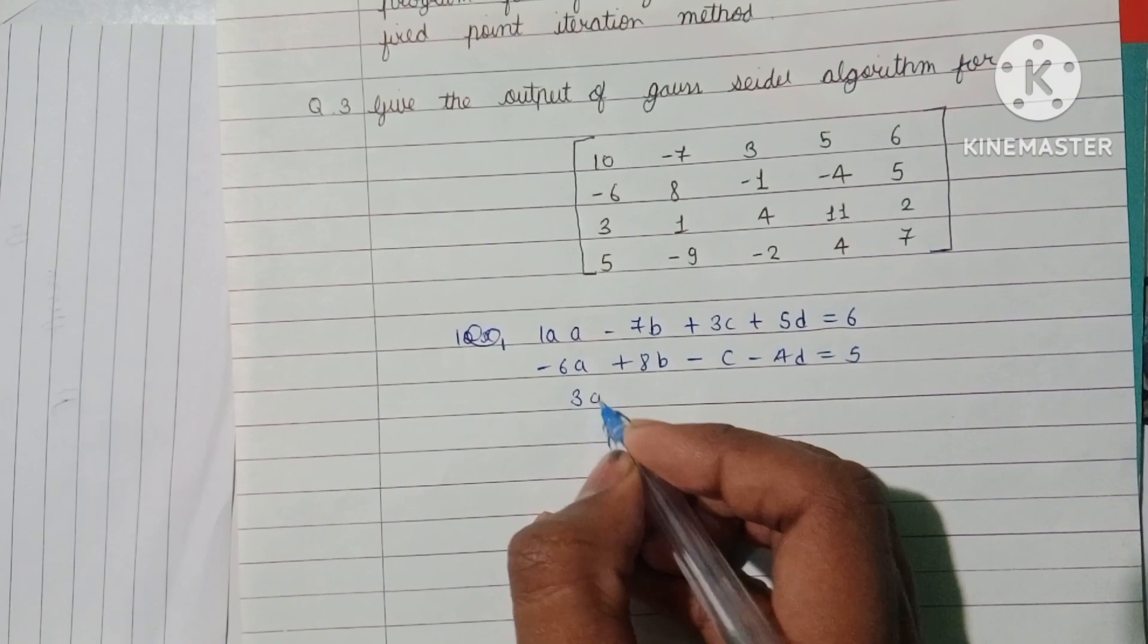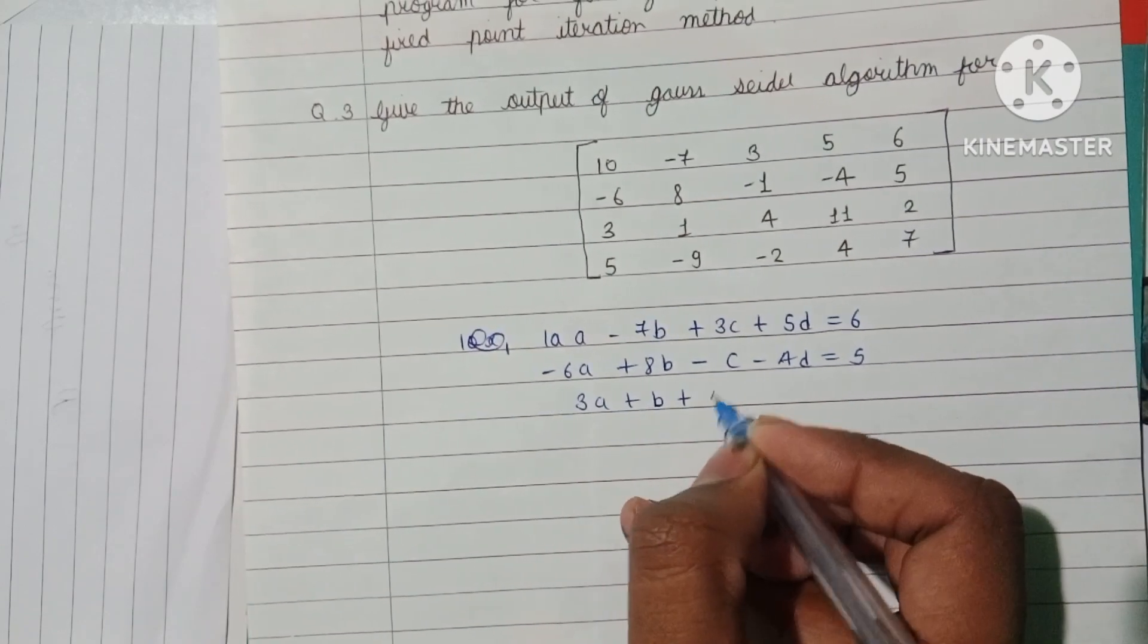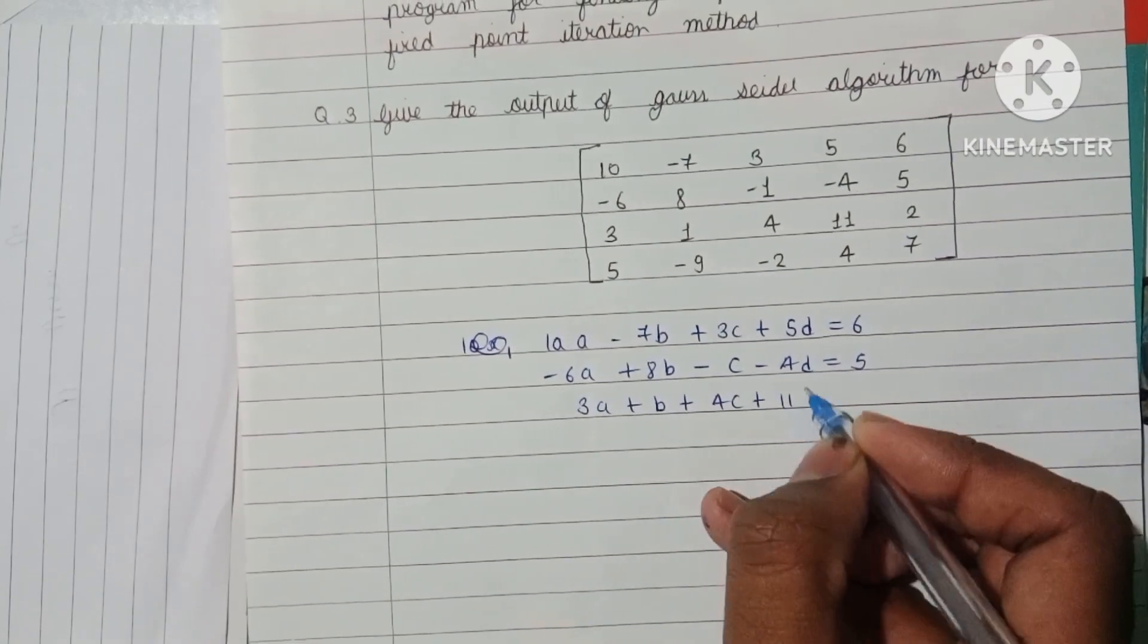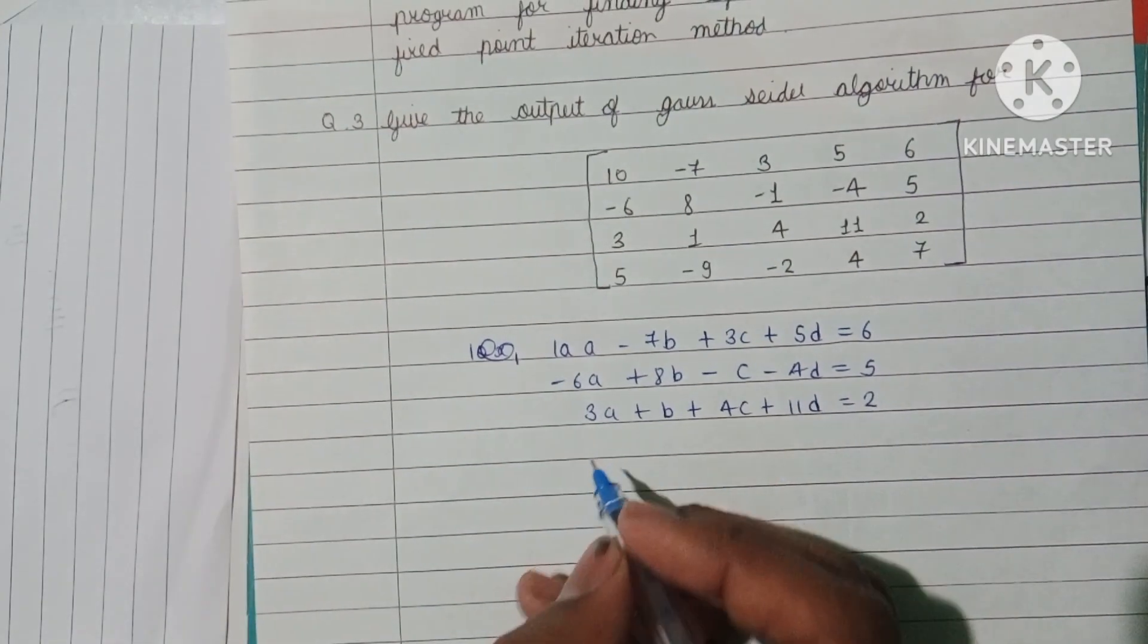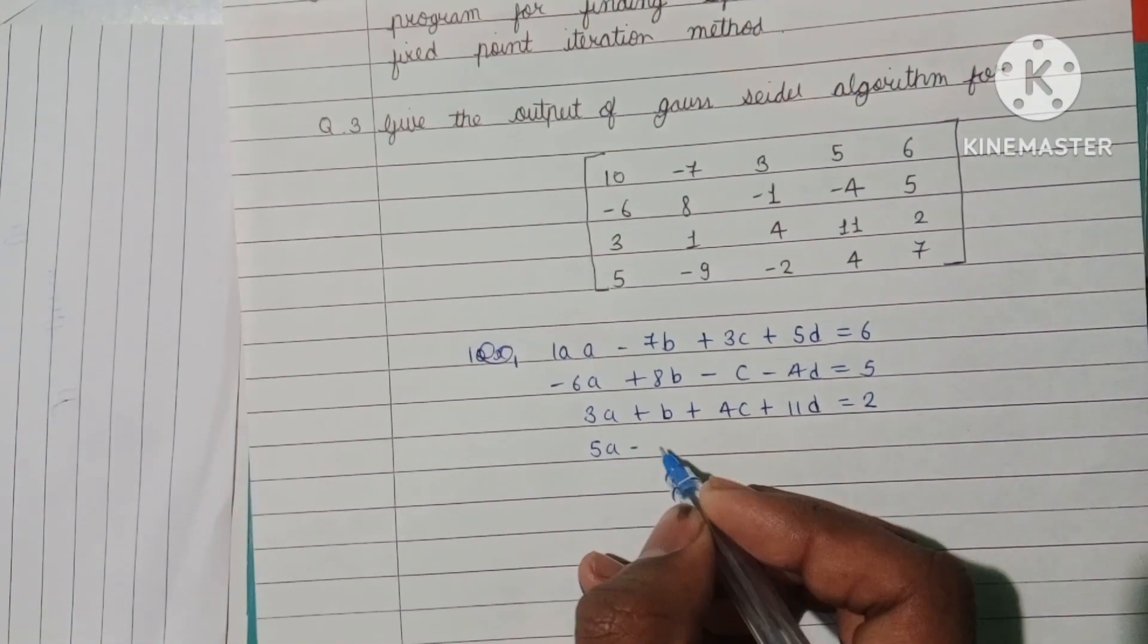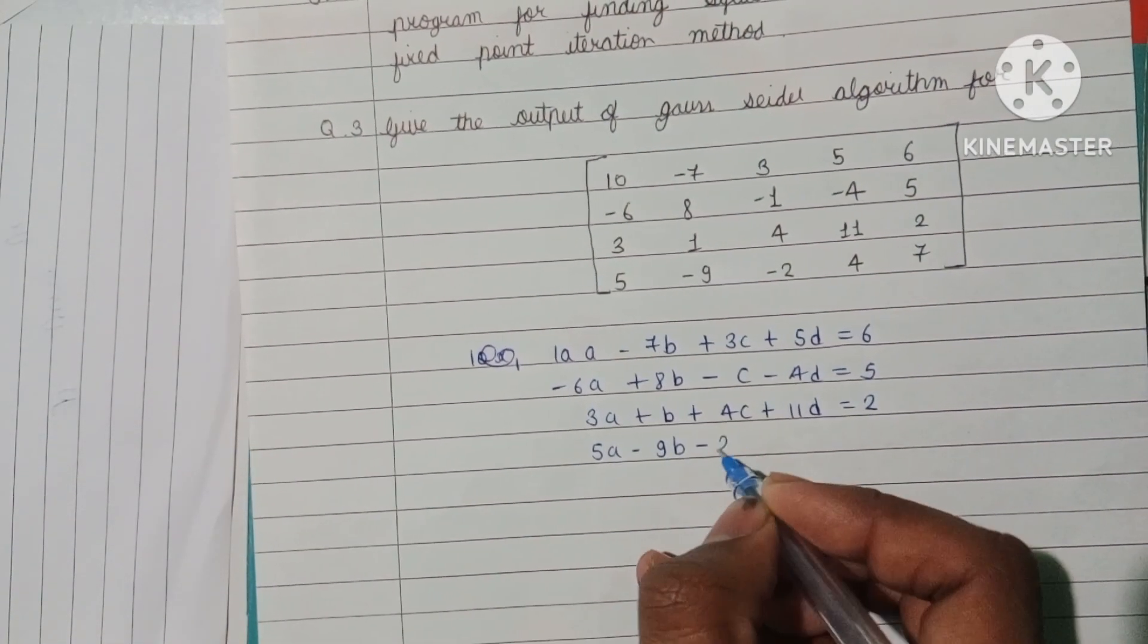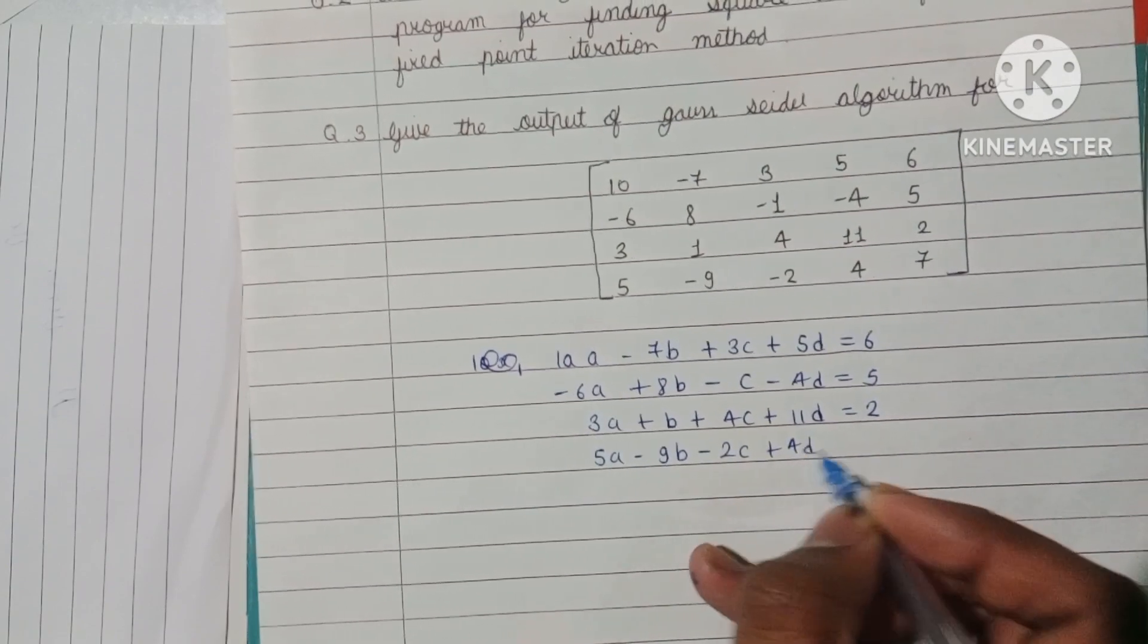3A + B + 4C + 11D equals 2. 5A - 9B - 2C + 4D equals 7.